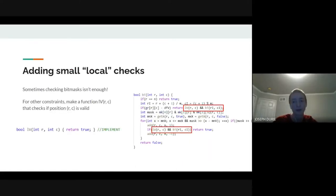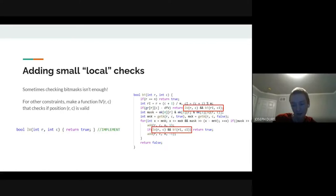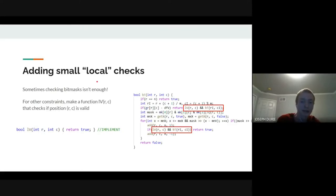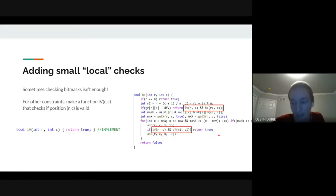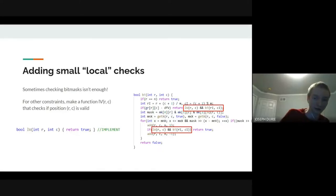We also want to support local validity checks—constraints that can't be expressed as bitmasks. We add a boolean locally_valid(r, c) function that checks whether placing the current value at (r,c) causes any local contradiction. This gets called in backtrack right before recursing to the next square.